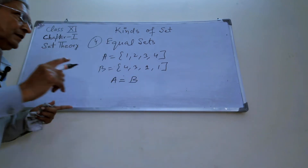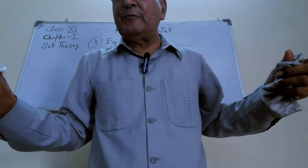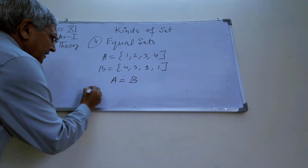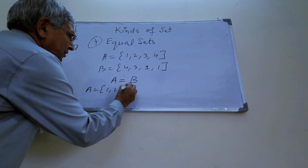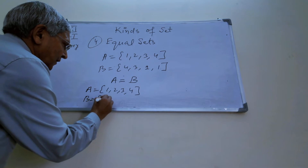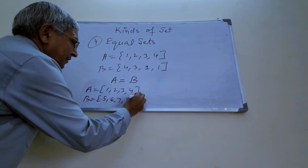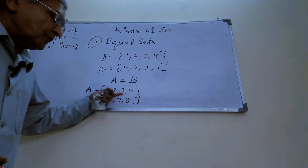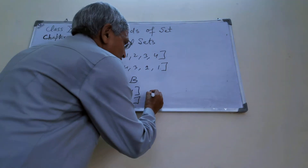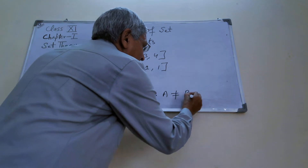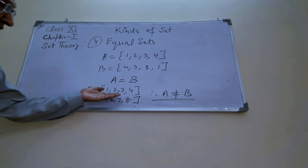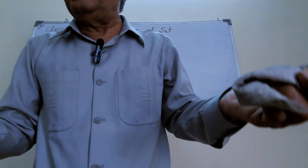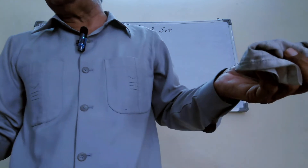If the sets do not have the same elements, then both the sets are unequal. For example, A equals {1, 2, 3, 4} and B equals {5, 6, 7, 8}. Elements of A are different from elements of B, and elements of B are different from elements of A. Therefore A and B are not equal sets — these are unequal sets. If all the elements are the same, the sets are equal; if all the elements are not the same, the sets are unequal.